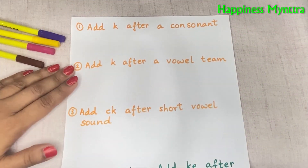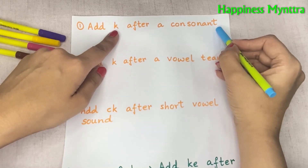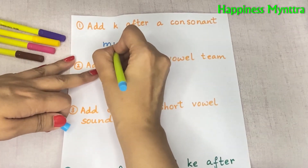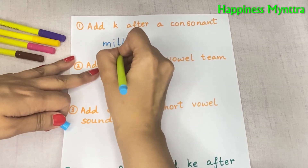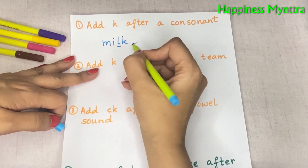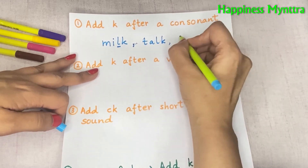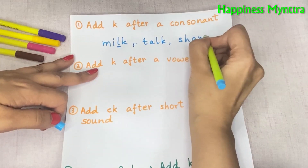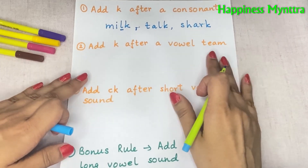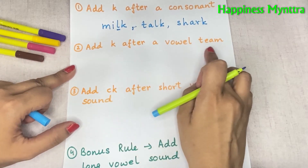The first rule is that we need to add just a K after a consonant. So it's the milk truck rule — 'milk' has a consonant, so we add just a simple K. Other examples would be 'talk', 'shark', and many more words.